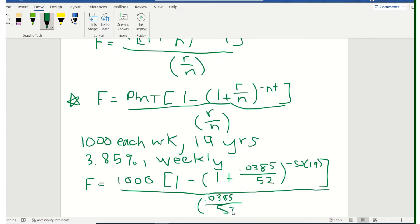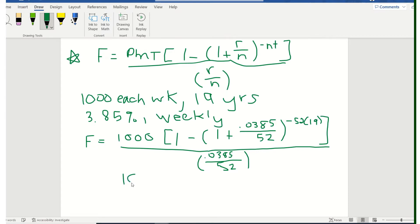Now, one of the things you want to be very careful about is entry into the calculator. So the first thing I'm going to do in my calculator is the 1 plus 0.0385 divided by 52 raised to this power. Be careful when you use your power button that you put all of this in parentheses. Otherwise, it will raise it to the 52 power and then multiply by 19.